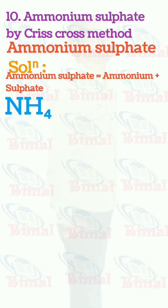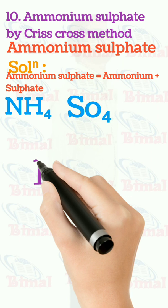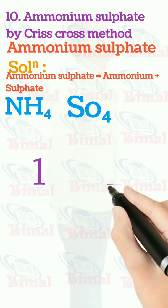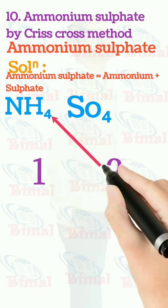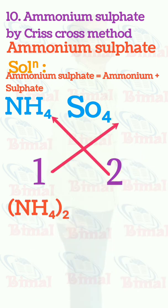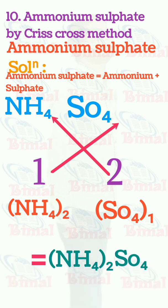Molecular formula of ammonium sulfate by criss-cross method. Ammonium sulfate is equal to ammonium plus sulfate. Symbol for ammonium is NH4, symbol for sulfate is SO4. Valency for NH4 is 1, valency for SO4 is 2. When criss-cross is done, the valency is exchanged and we get (NH4)2 and SO4(1), which is equal to (NH4)2SO4. We don't write SO4(1), just SO4, so (NH4)2SO4 is the molecular formula for ammonium sulfate.